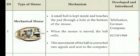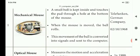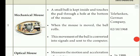A small ball is kept inside and touches the pad through a hole at the bottom of the mouse. When we move the mouse, the ball rolls and this movement is converted into signals and sent to the computer.